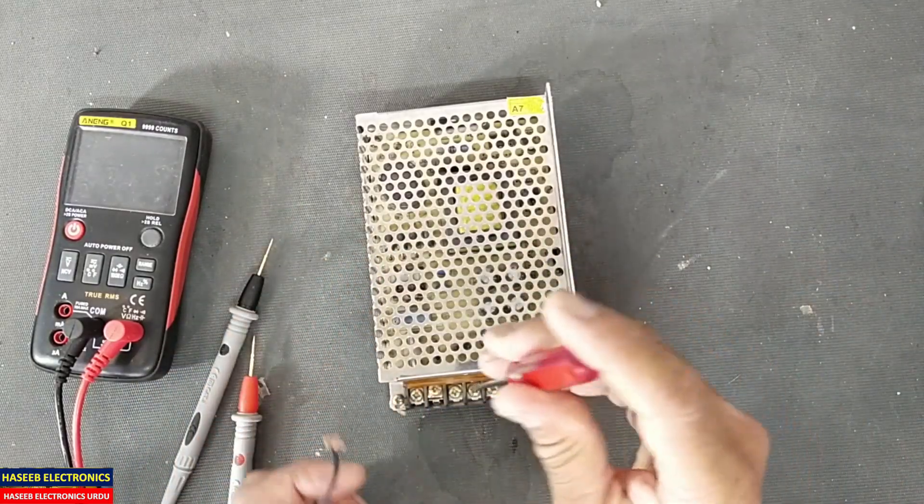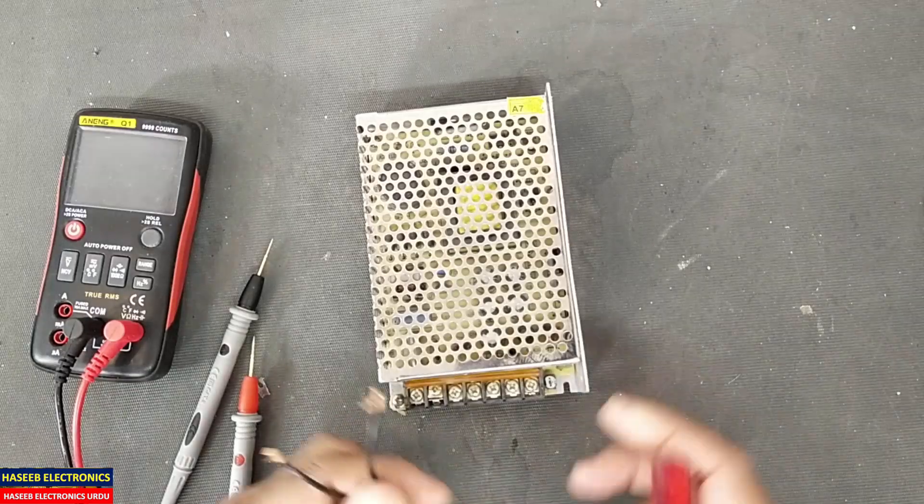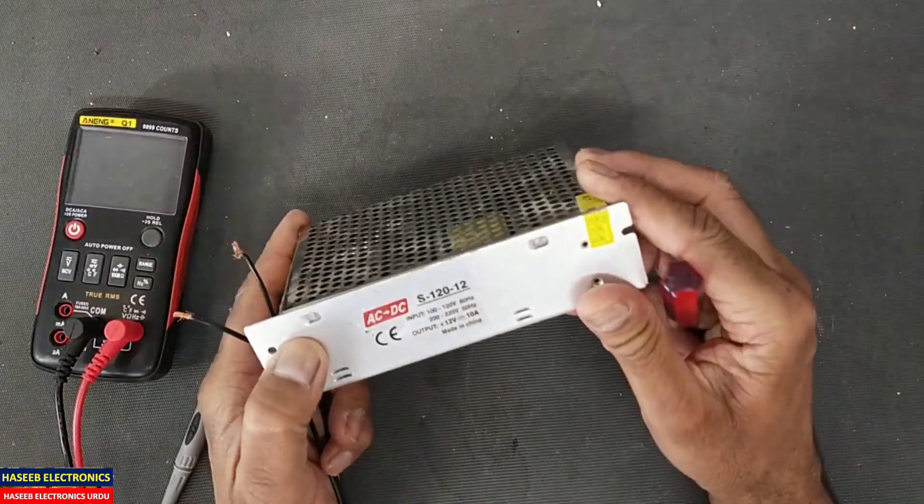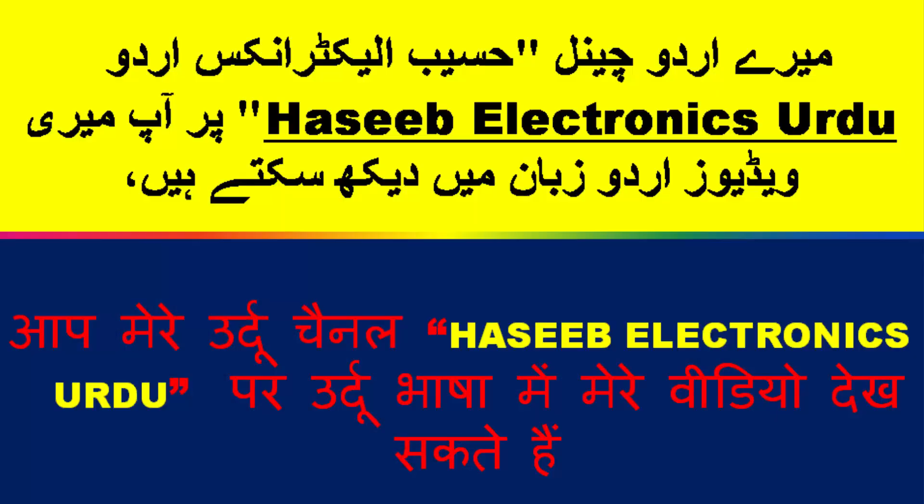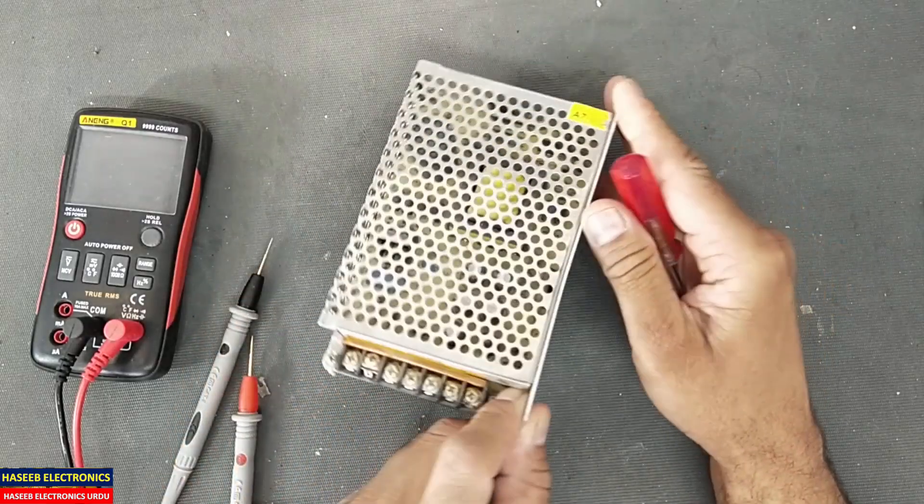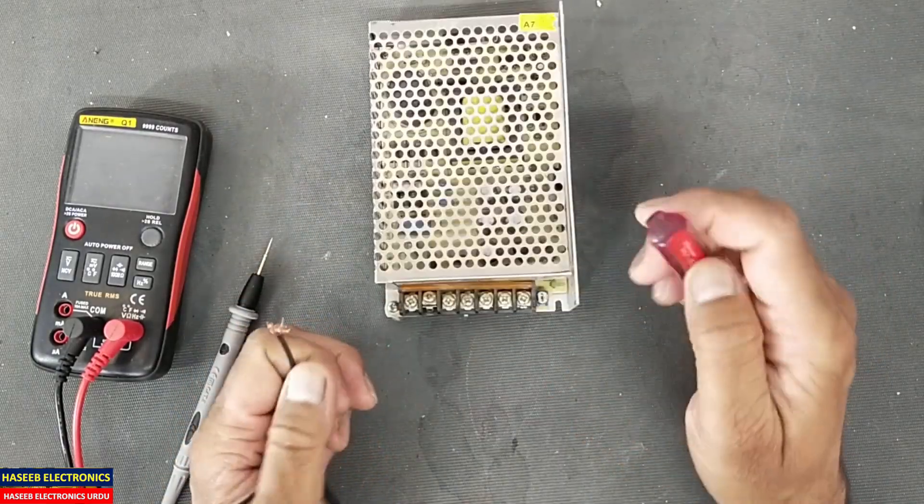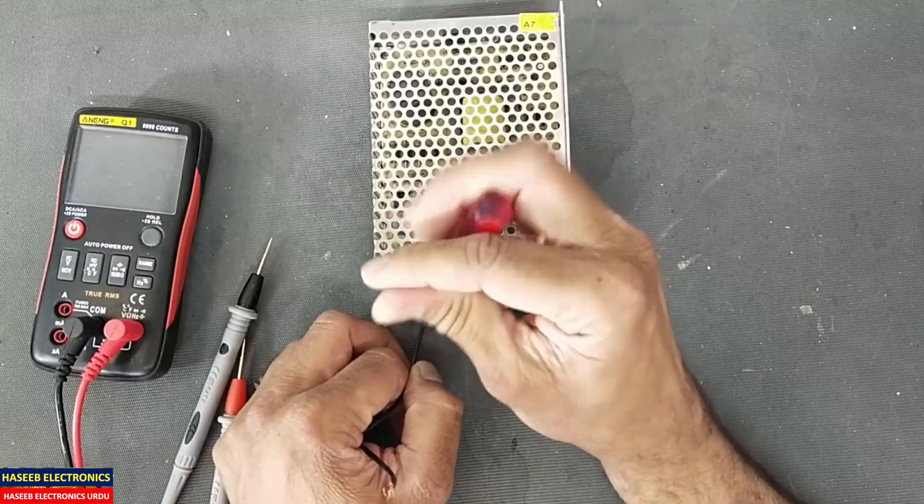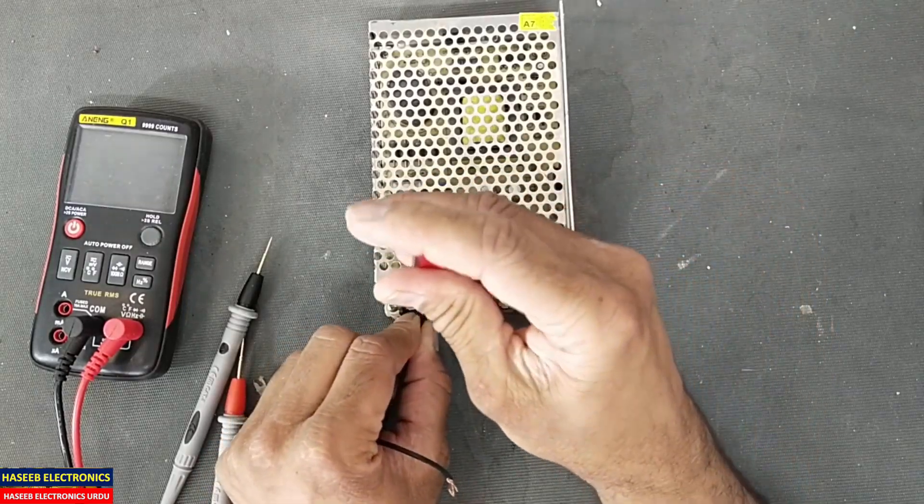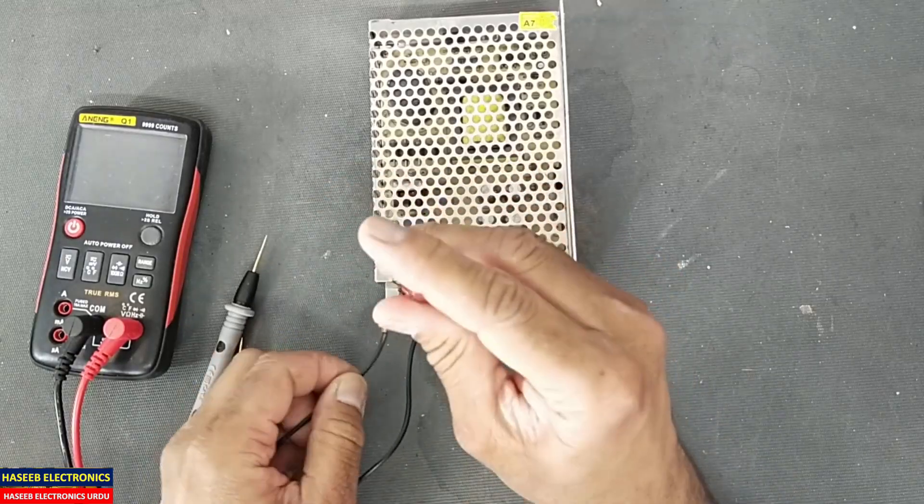Assalamualaikum warahmatullahi wabarakatuhu friends, welcome back to my channel. Today I have this industrial power supply, the S120-12, 12 volt 10 ampere. This power supply has a problem - its output voltage is fluctuating. Let's check it.